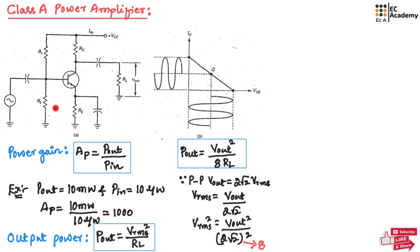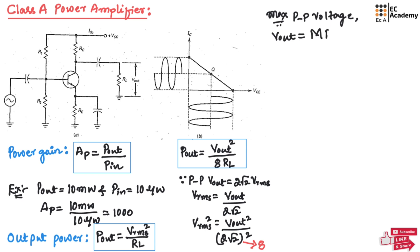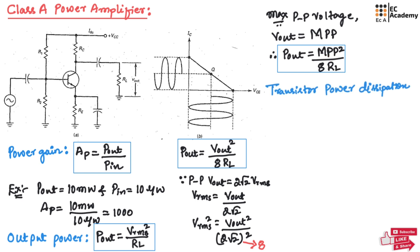The class A power amplifier produces maximum output power when it produces the maximum peak-to-peak output voltage. So for maximum peak-to-peak voltage, we can write: P_out(max) = V_out(max, peak-to-peak)² / (8 × R_L). This is the equation for maximum output power in terms of maximum peak-to-peak voltage.